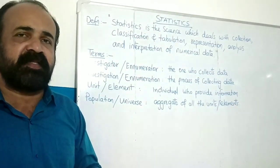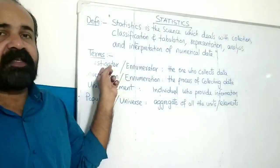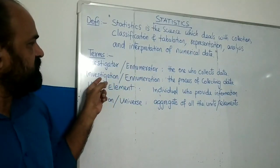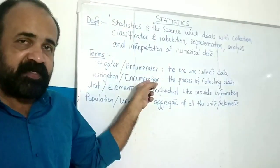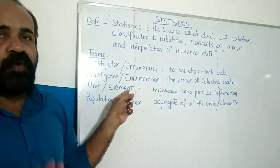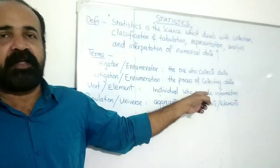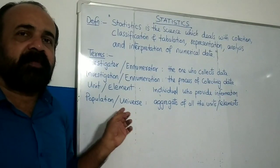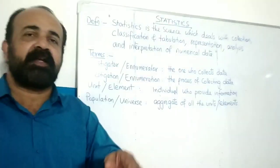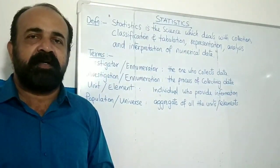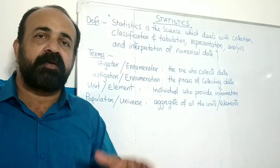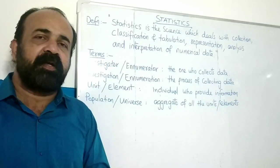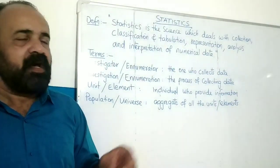The process of collecting data is carried out by an Investigator or Enumerator. This process is called Investigation or Enumeration. The group being studied is called the Universe or Population, and each individual item is called a Unit or Element. These are the technical terms in statistics.